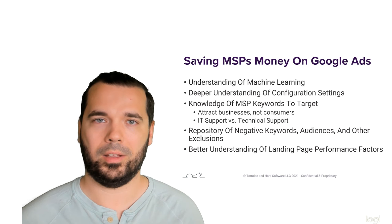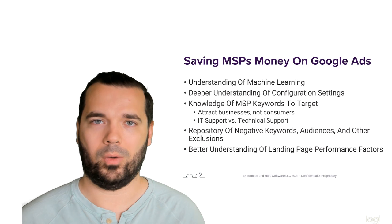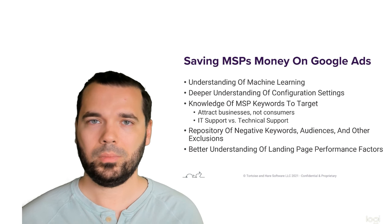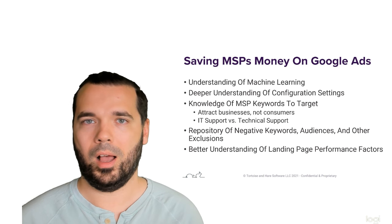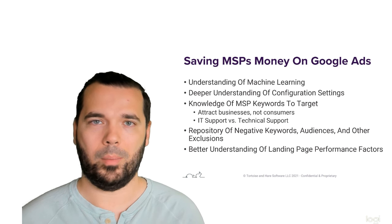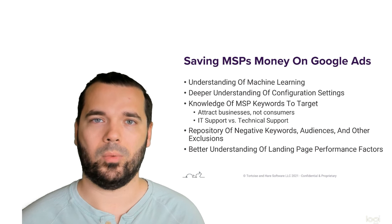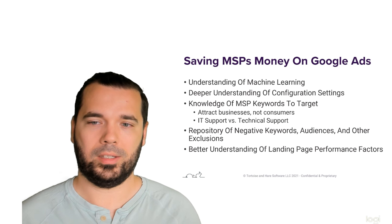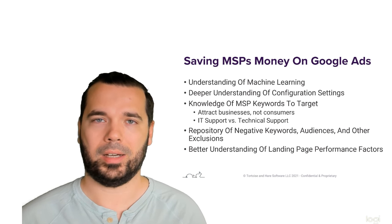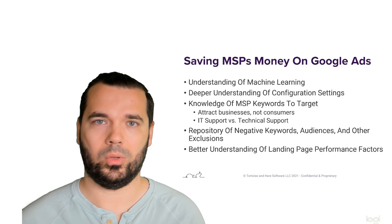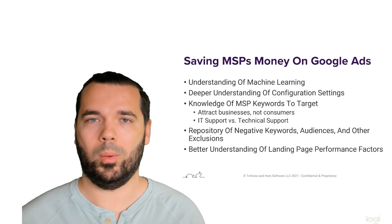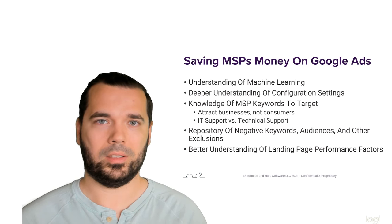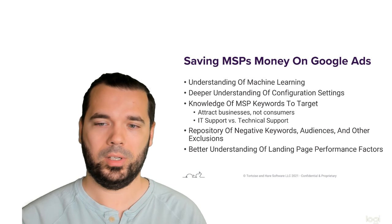The next reason we can help save MSPs a ton of money on Google Ads is that we have knowledge of MSP keywords to target. We actually have a free download of 30 industry keywords that convert for MSPs — you can download that on the Tortoise and Hare Software website, link in the video below. These are 30 free keywords with documented conversion history when advertising on Google for other MSPs. One of the things I see MSPs struggle with is attracting consumers instead of businesses.